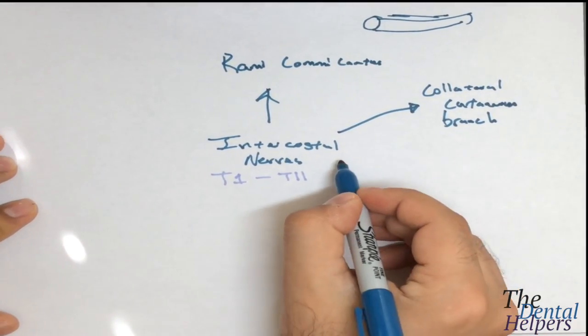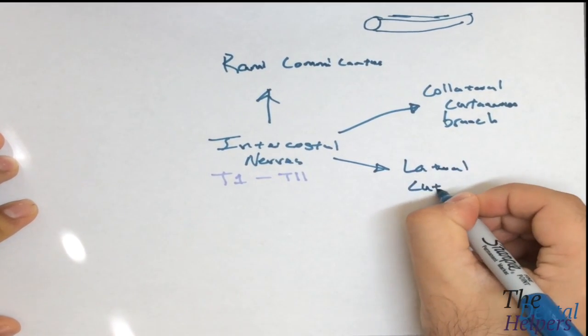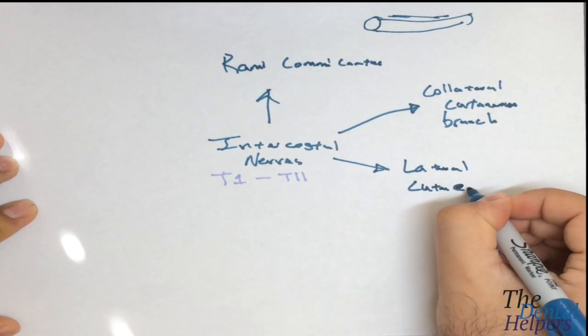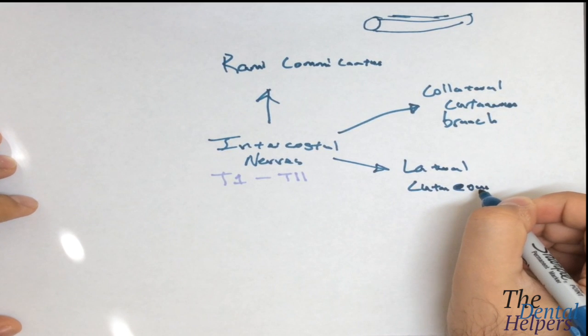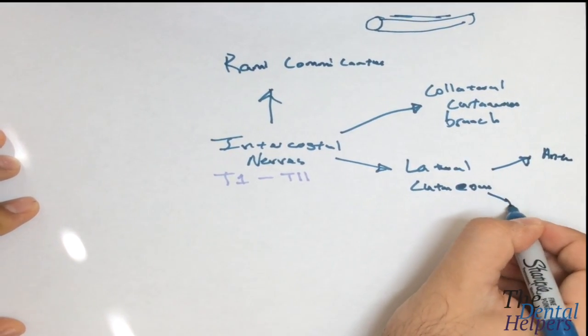Then we have the lateral cutaneous, which innervates the skin on the sides of the thoracic wall by dividing into anterior and posterior branches.